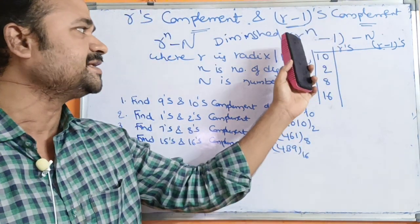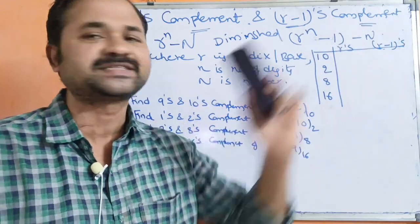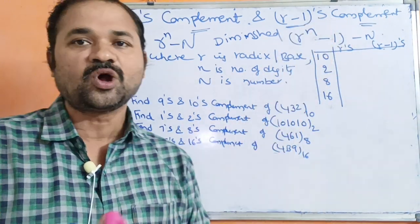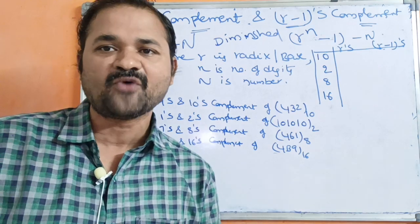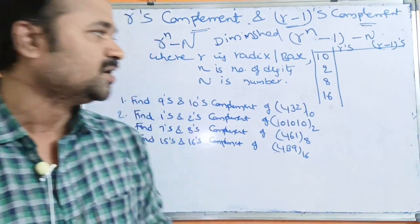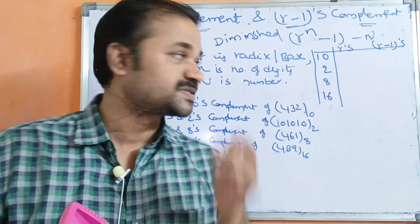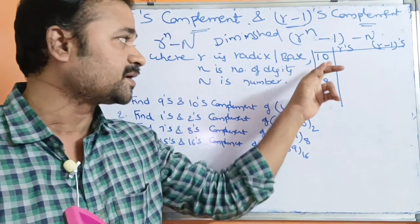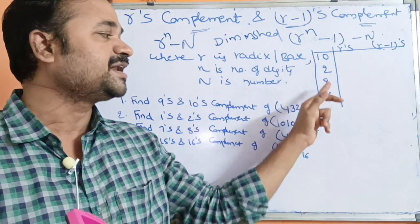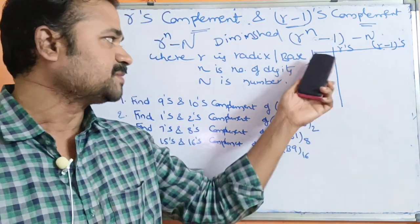The formula for R-1's complement is R^n minus 1 minus N, where R is the radix or base value, small n is the number of digits, and capital N is the given number. We have 4 types of number systems: decimal, binary, octal, and hexadecimal.